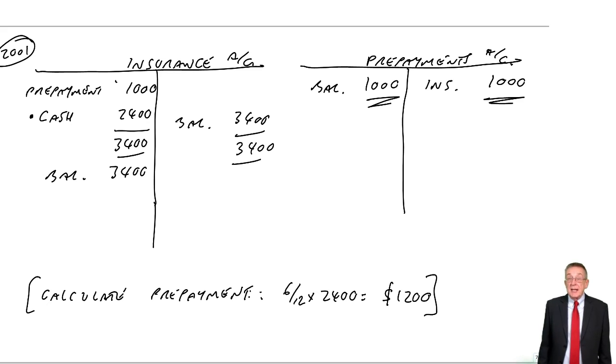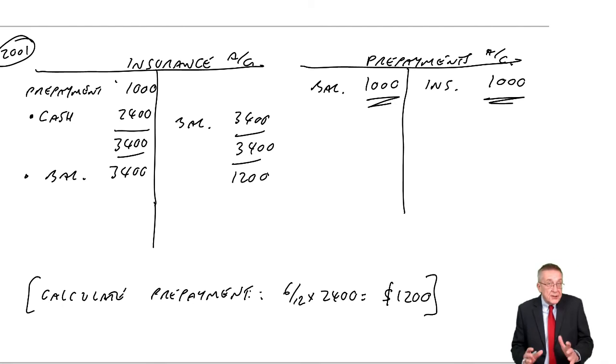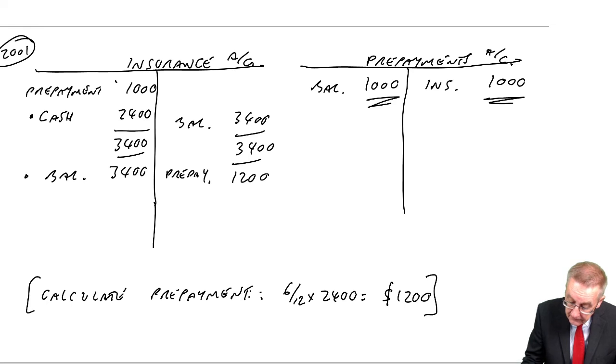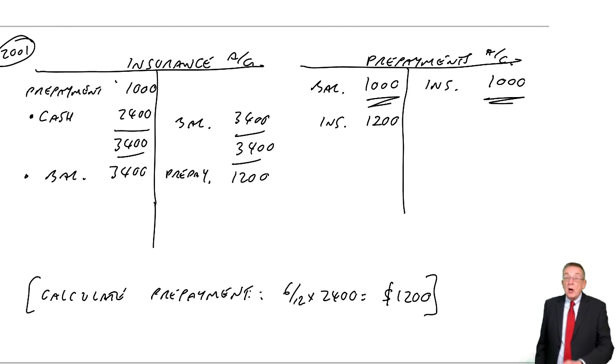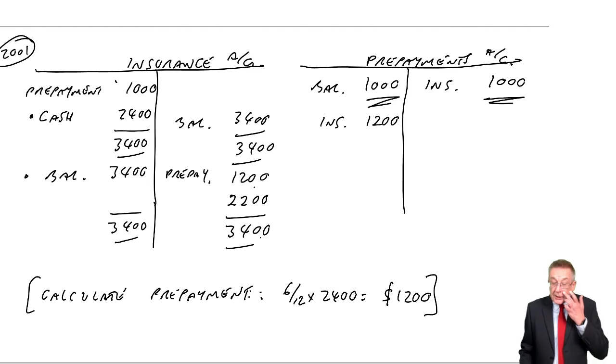In exactly the same way as last year, having discovered that total includes an overpayment, we take it out. We credit insurance—that $1,200 wasn't part of this year's expense—and we debit prepayments. That one entry now sorts it. Because go back to insurance: how much is left on the account? Debit $3,400, credit $1,200—the net amount is $2,200. That $2,200 is the expense for this year. Credit insurance, debit Statement of Profit or Loss. The balance is zero, ready for next year.